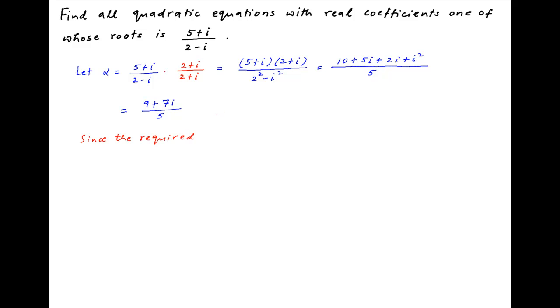Now since the required quadratic equation has real coefficients, the other root of this equation must be the conjugate of alpha, which is equal to 9 minus 7i upon 5.